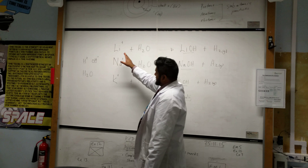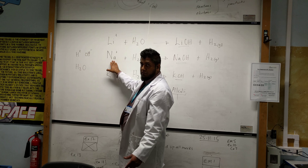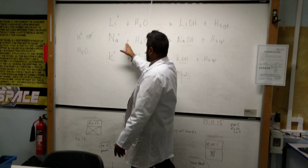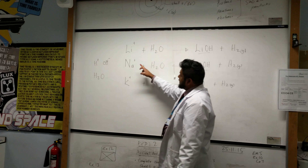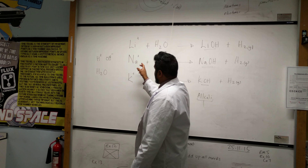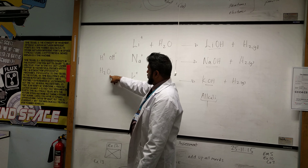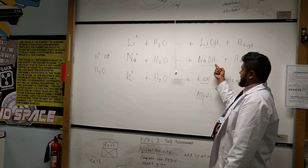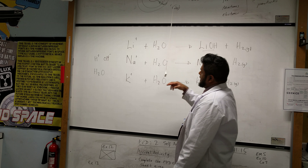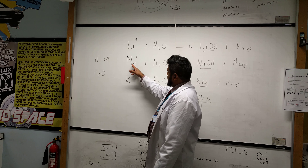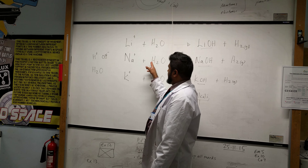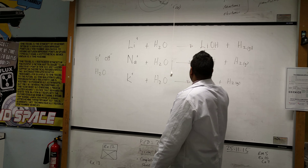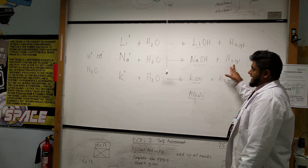The same applies if we work down the group of alkali metals. With sodium plus water, the sodium combines with the hydroxide ion in water to form sodium hydroxide, and the hydrogen ions that are left over are then liberated as hydrogen gas.